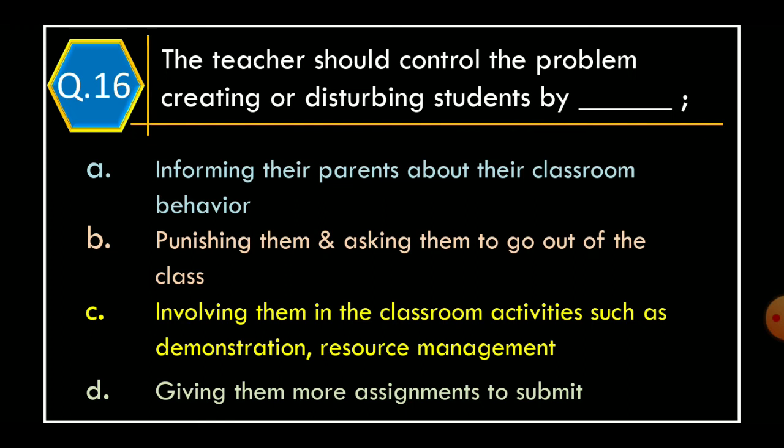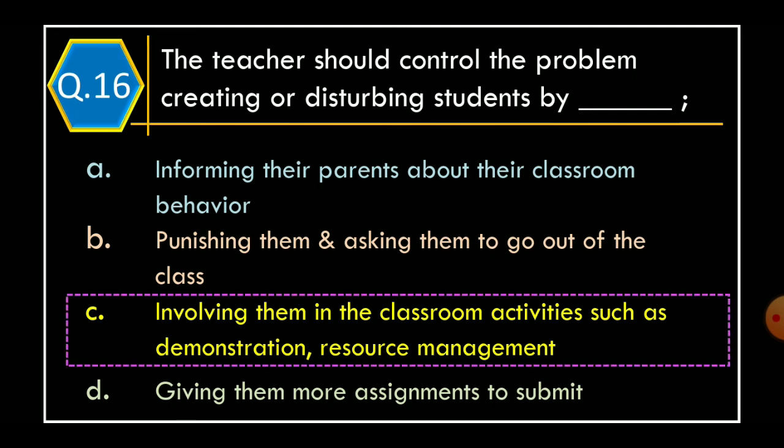Question 16. The teacher should control the problem-creating or disturbing students by: Option A. Informing their parents about their classroom behavior. Option B. Punishing them and asking them to go out of the class. Option C. Involving them in classroom activities such as demonstration and resource management. Option D. Giving them more assignments to submit. The correct option is Option C: Involving them in classroom activities such as demonstration and resource management.